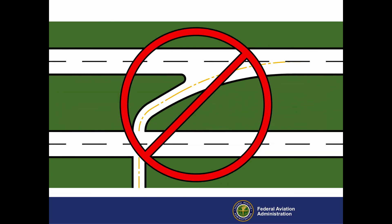Finally, because airplanes exit at a speed higher than normal taxi speed, never design a high-speed exit to lead onto another runway. High-speed exits must always lead onto a parallel taxiway. Pilots expecting to encounter a parallel taxiway may not be able to stop in time, resulting in a runway incursion.